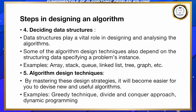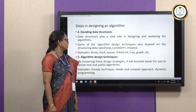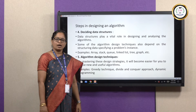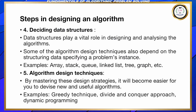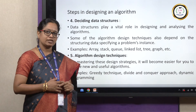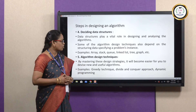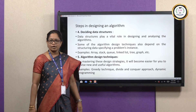The fourth point is deciding on the data structures, which play a very important role in designing and analyzing the algorithm. Some commonly used data structures are array, stack, linked list, tree, graph, etc. The fifth step is algorithmic design techniques. Once you are aware of the design techniques, it becomes easier to design an algorithm. Some techniques are the greedy technique, divide and conquer approach, dynamic programming, etc.